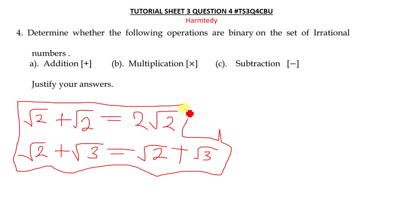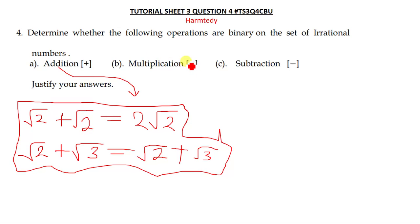In other words, they're asking whether there is any way to make the operation undefined by adding two irrational numbers. If there is no way to make it undefined, then we conclude that addition is a binary operation on the set of irrational numbers.